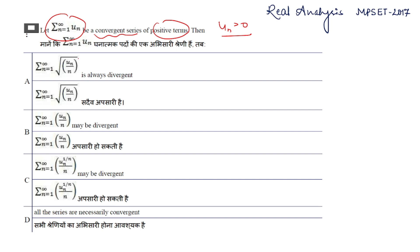The first option states that the series √(uₙ)/n is always divergent. To check this, we consider two convergent series: uₙ (given convergent) and 1/n^(2p) which is convergent if p > 1 (p-series). We take the geometric mean of these two terms.